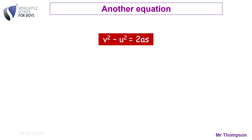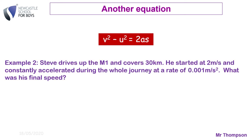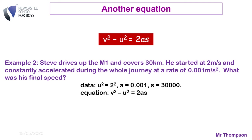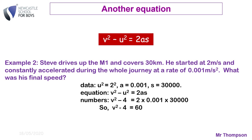Example two: Steve drives up the M1, covering 30 kilometres, starting at 2 m/s and constantly accelerating at 0.001 m/s². What is his final speed? Here u = 2, so u² = 4; a = 0.001. Don't be tricked — the distance was given in kilometres, so you must convert: 30 km = 30,000 metres. Plugging into the equation: v² − 4 = 2 × 0.001 × 30,000.